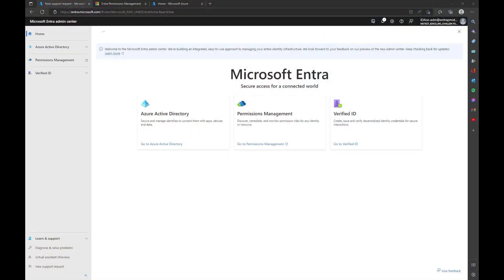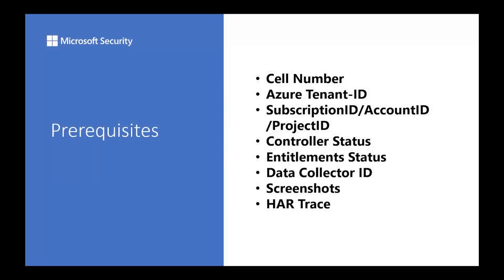As a reminder, before we open a case for anything, we need to make sure that we grab all the prerequisites. If you haven't watched part one, you might want to, just to be sure you have all this data. We want you to collect: the cell number, Azure Tenant ID, Subscription ID, Account ID, Project ID, Controller Status, Entitlement Status, Data Collector ID, Screenshots, and Hard Traces. Explanations of these are in part one of this series.